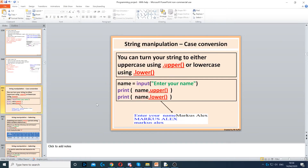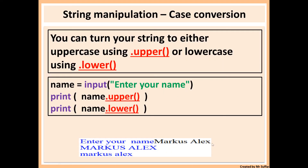Next we have case conversion. You can use dot upper and dot lower to convert to either uppercase or lowercase. In this example I've asked the user for a name, then displayed the name in uppercase and then in lowercase. You put the variable name and then dot upper with open and close brackets — this is a built-in Python function. Dot lower will change it to lowercase. So I typed Marcus Alex and it displayed MARCUS ALEX all in capitals, then marcus alex all in lowercase.